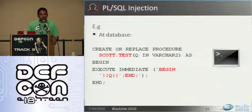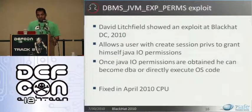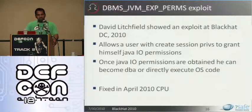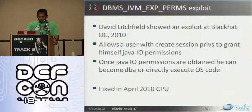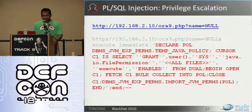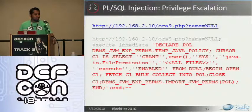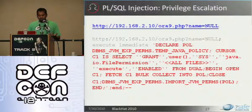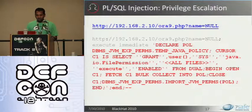This particular example is vulnerable to PLSQL injection. David Litchfield showed an exploit at Black Hat DC this year which allows a user with only create session privileges to grant himself Java IO permissions. Once these Java IO permissions are obtained, OS code execution is possible. This particular issue was fixed by Oracle in the CPU of April 2010. If you look at the exploit, essentially in the SCOT.test procedure, the argument is passed as null — the procedure to execute is null — and then the next statement is execute immediate, which contains the entire exploit code that will give the current user Java IO permissions. This was a logical flaw in the package DBMSJVMExportPermissions.